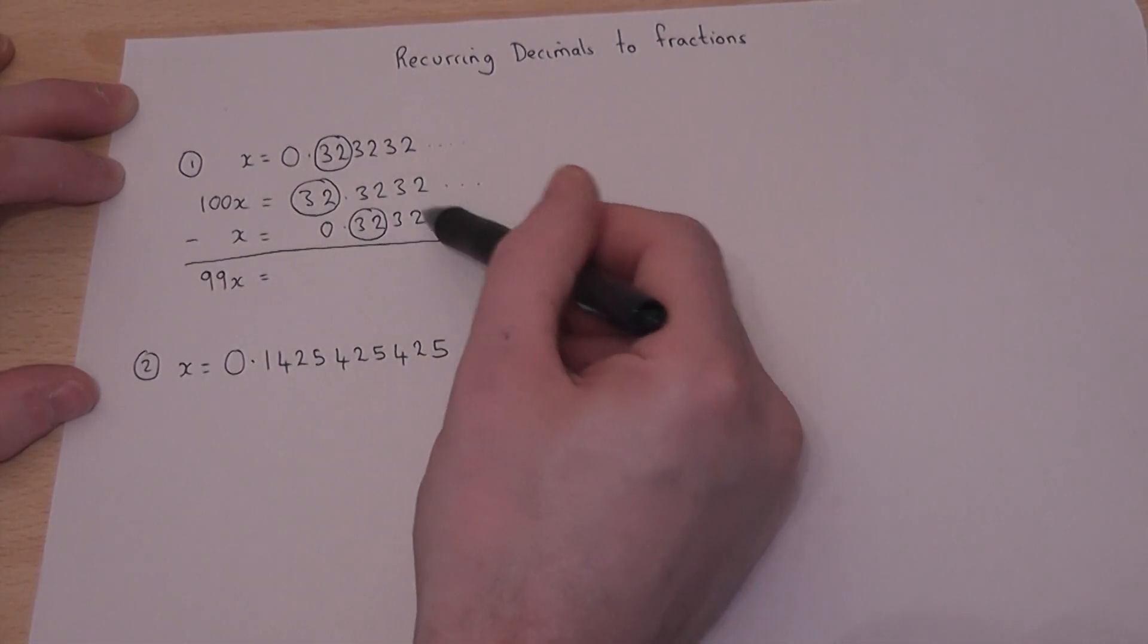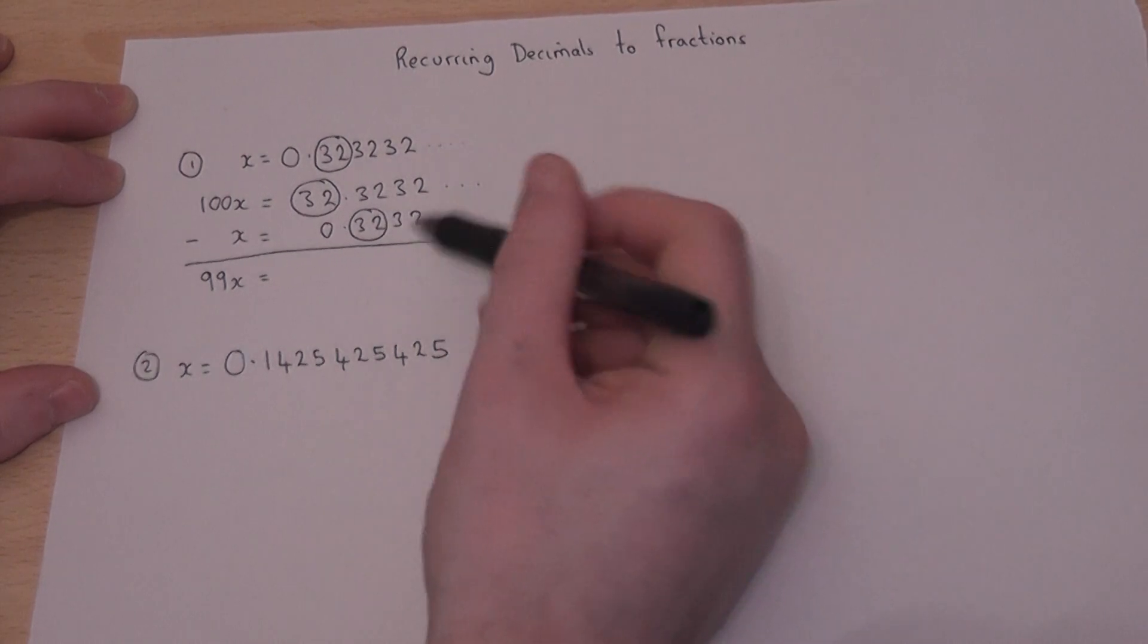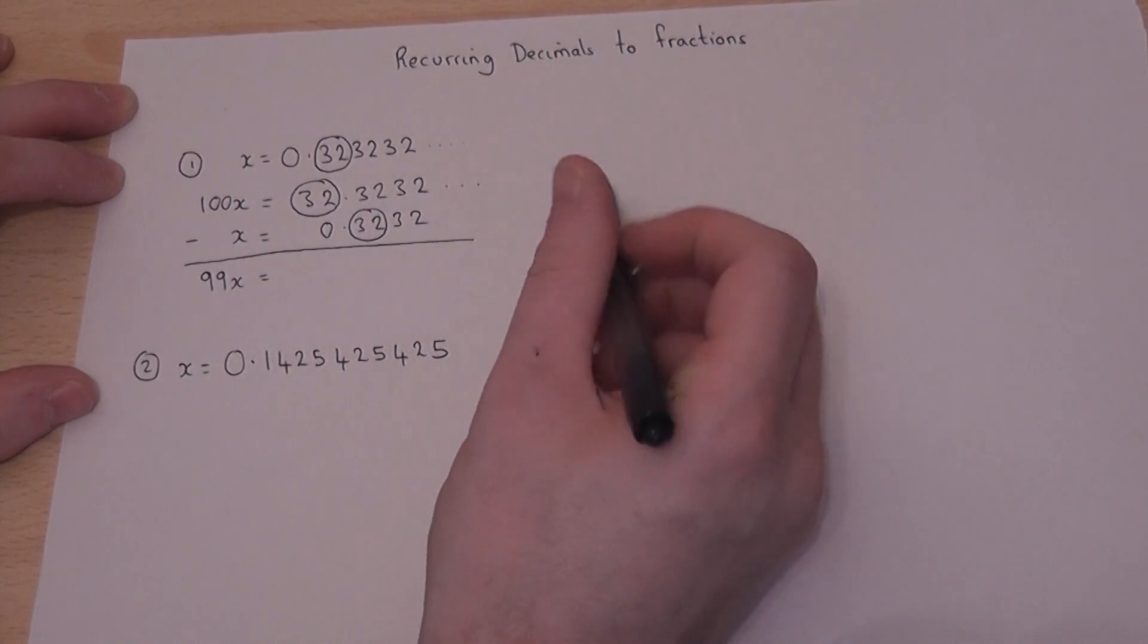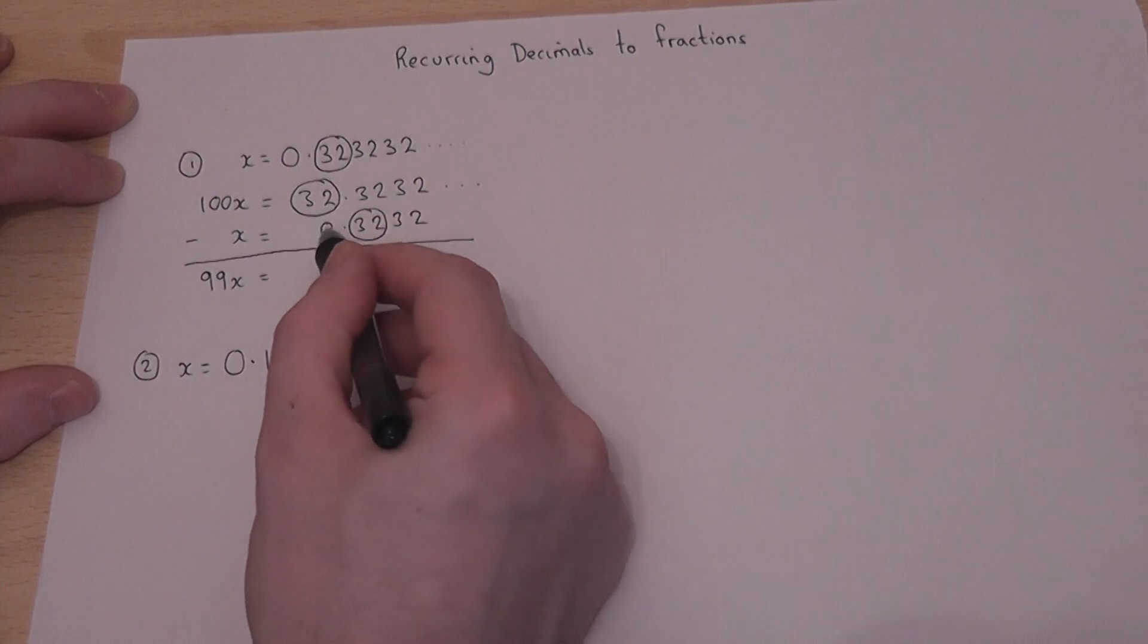But 32.3232 minus 0.3232. All of the decimal points, so numbers after the point, cancel out. So I'm left with 32 take away 0, which is 32.